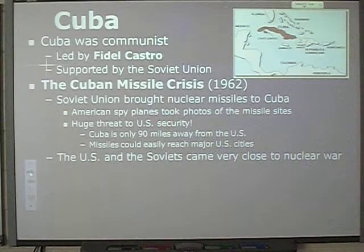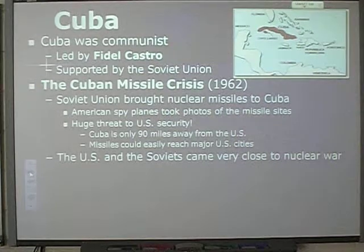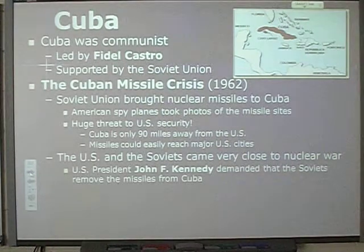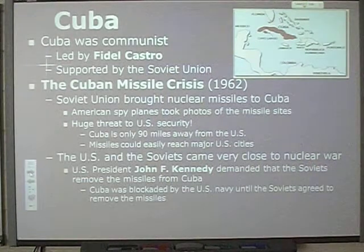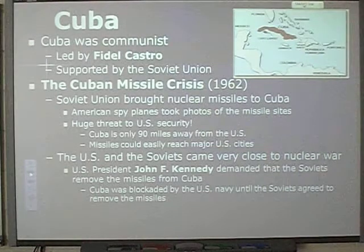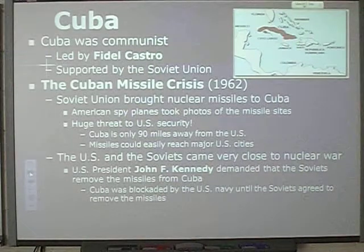The U.S. and Soviets came very close to nuclear war during this time. People began making fallout shelters because they wanted to be prepared in the event of an attack. U.S. President John F. Kennedy demanded the Soviets remove the missiles from Cuba. Initially this wasn't happening, but the U.S. military imposed a blockade on Cuba until the Soviets agreed to remove the missiles.